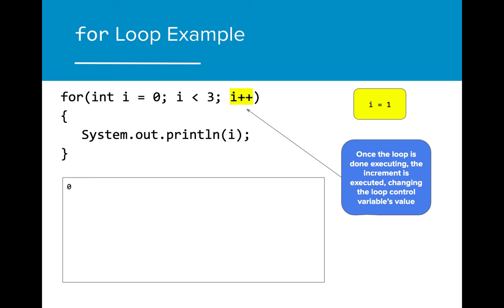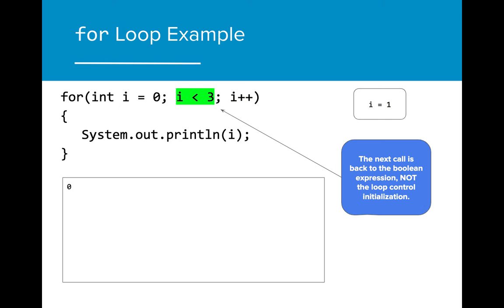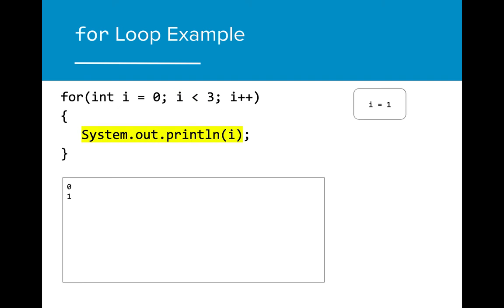Next, the increment is executed. Once the for loop is done executing, the increment is executed so as to change the loop control variable. The value of i is now one. The next call is back to the Boolean expression, not to the loop control variable initialization. The loop control value is only set at the beginning of the for loop. Since the Boolean expression is still true, the for loop executes. The value of i is printed to the console — now i is one.